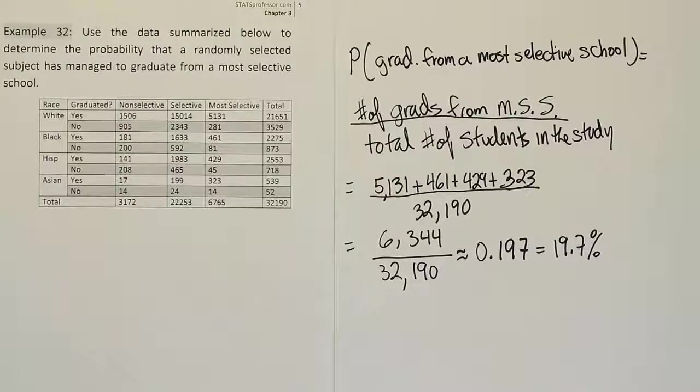Because the whole argument against affirmative action is that students who are less qualified get in based on other factors, and because they have lower test scores and therefore perhaps maybe academically less qualified than somebody else.